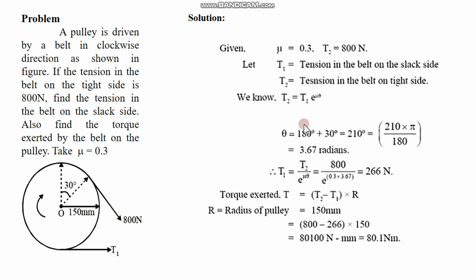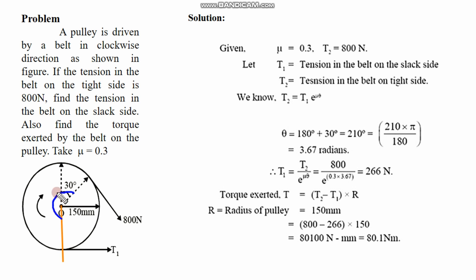So T1 is equal to T2 divided by e to the power mu·θ. The angle is different here. This angle is exactly 90 degrees, and this is 30 degrees. If the angle is considered fully, you have to solve for the angle of wrap. It means the angle is 180 plus 30. So this is horizontal, and this angle is 180 plus 30 — that is the angle of wrap of the drum.